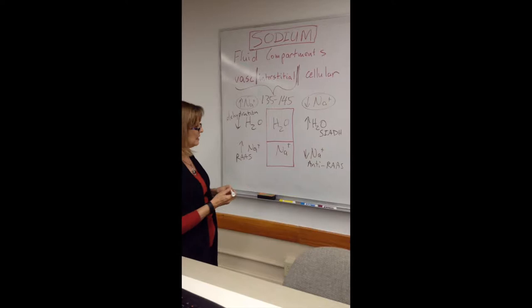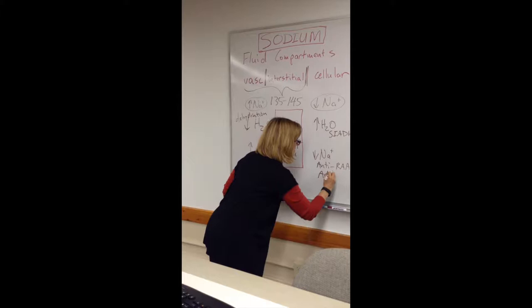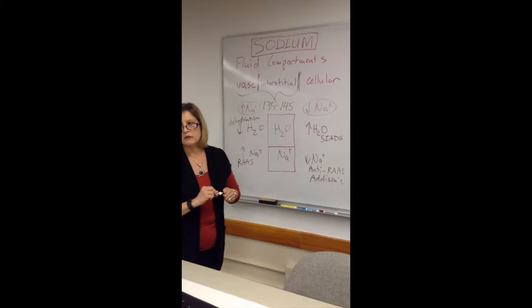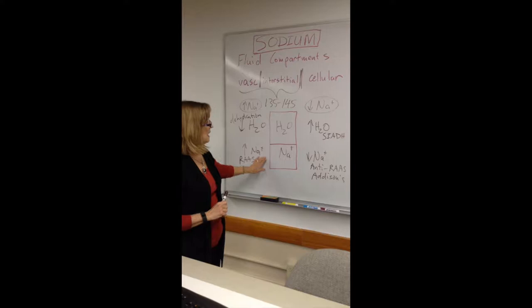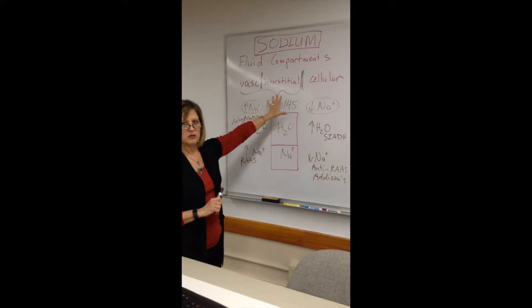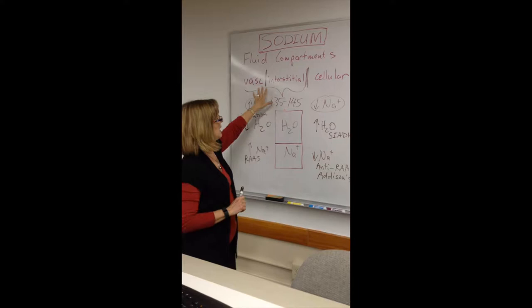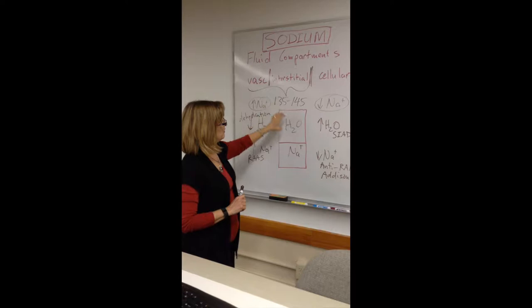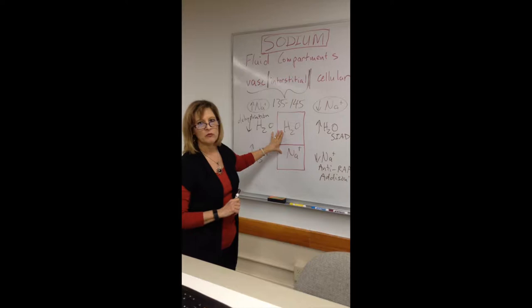Another cause of low sodium would be a problem with the RAAS system causing you to lose more sodium — for example, certain drugs or a disease like Addison's. So we have to look at sodium as a ratio of water to sodium. When a patient eats a lot of sodium, they won't necessarily throw it out of range, because water passively follows sodium — the real problem becomes one of volume.